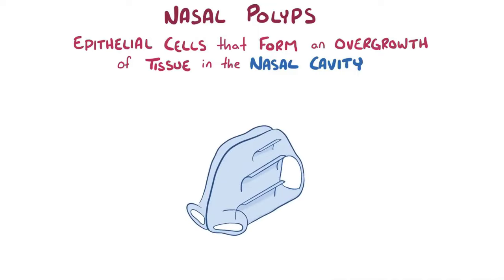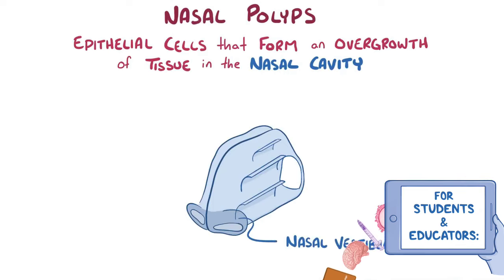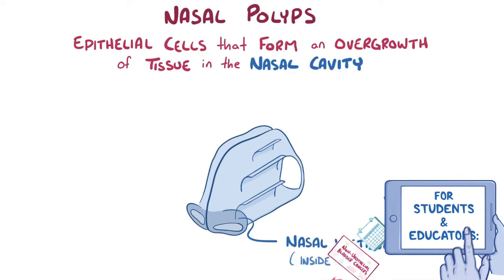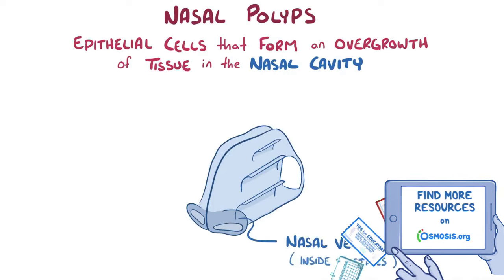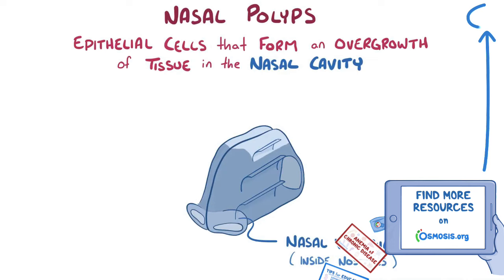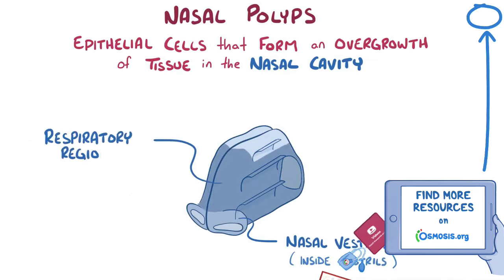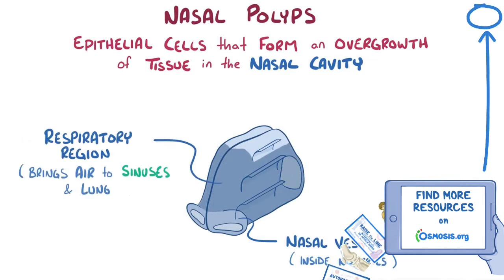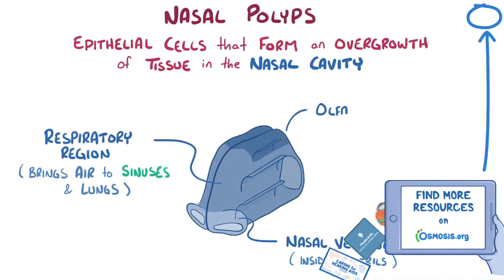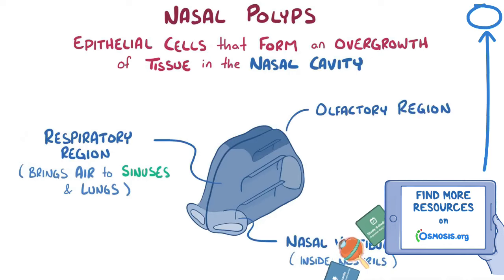The nasal cavity is made up of three regions. The first is the nasal vestibule, which is the area just inside the nostrils. Beyond that is the respiratory region, which delivers air to the sinuses and lungs. And above that is the olfactory region, which is involved in smelling.